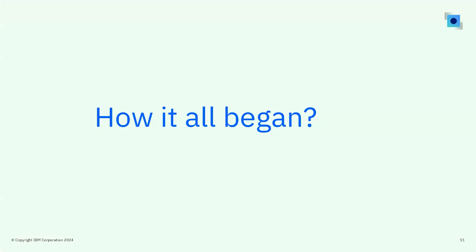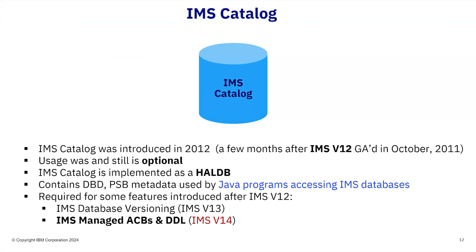Let's talk about how this all began. The catalog was introduced in 2012 — actually IMS version 12 GA in October of 2011, then a few months later in 2012, I think sometime in April, we introduced the IMS catalog. The IMS catalog was optional back then and even today it's still optional. The catalog is implemented as a HAL DB database, and it contains your DBD and PSB metadata required when you have Java programs accessing IMS databases. Metadata basically is a fancy word that means data about data — so what we have in the catalog is data about your databases.